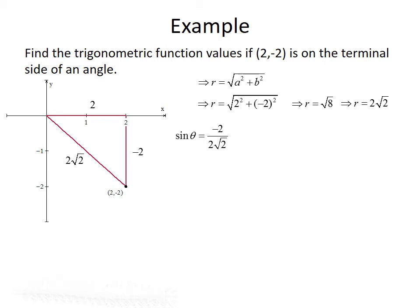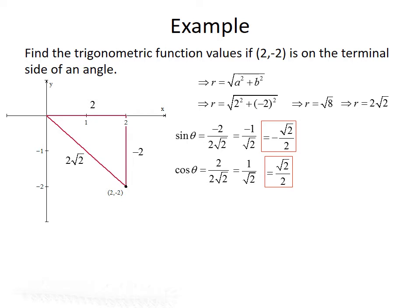Now that we know all three sides of the corresponding triangle, we can find the trig function values. Sine of theta is opposite over hypotenuse, so that's -2 divided by 2√2. The 2s cancel, giving us -1 over √2, which rationalizes to -√2 over 2. Cosine of theta is adjacent over hypotenuse: 2 over 2√2. The 2s cancel to give 1 over √2, which rationalizes to √2 over 2. Tangent of theta is opposite over adjacent: -2 over 2, which simplifies to -1.